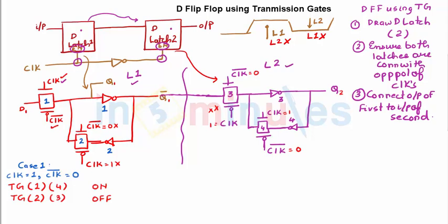Because transmission gate 1 is on, let's see what happens due to this. What happens is nothing but my Q1 will be equal to D1, because this is nothing but a closed switch, correct? So the output of inverter 1 would be Q1 bar.